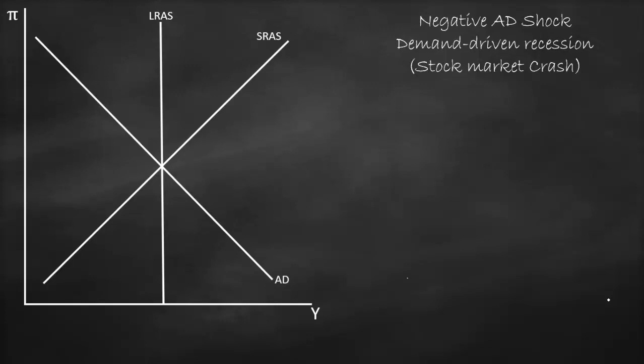All three curves intersect at the same point, giving us an equilibrium at point A. This gives us our potential output, full employment output, or natural rate of output. At this rate we have our NAIRU — the natural rate of unemployment — and this gives us our inflation level one.